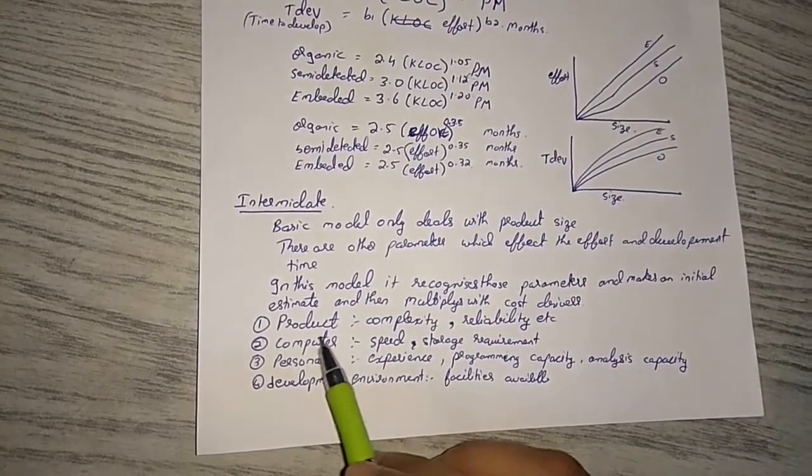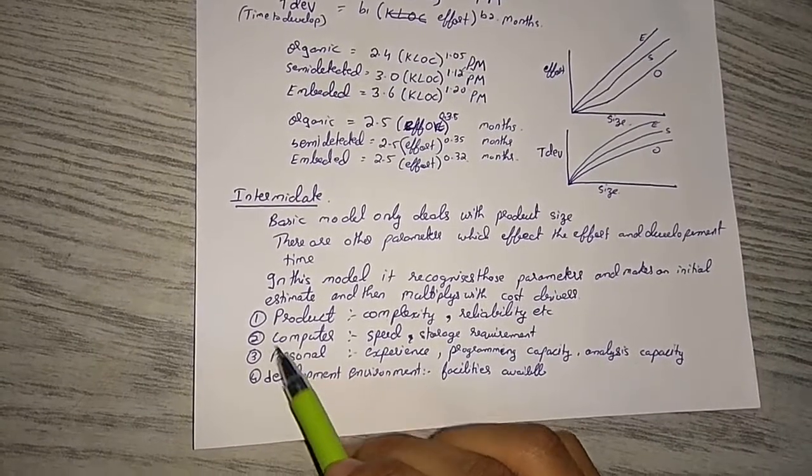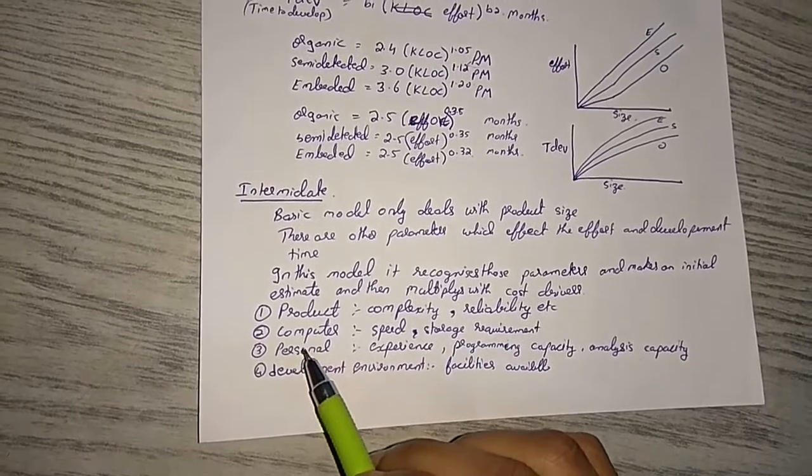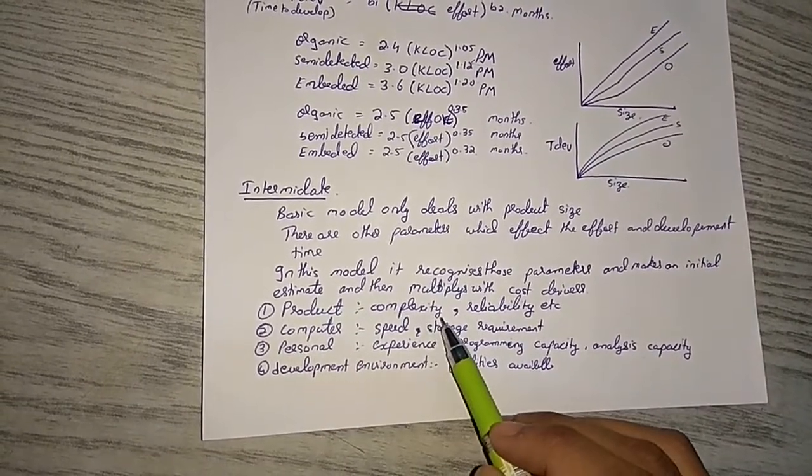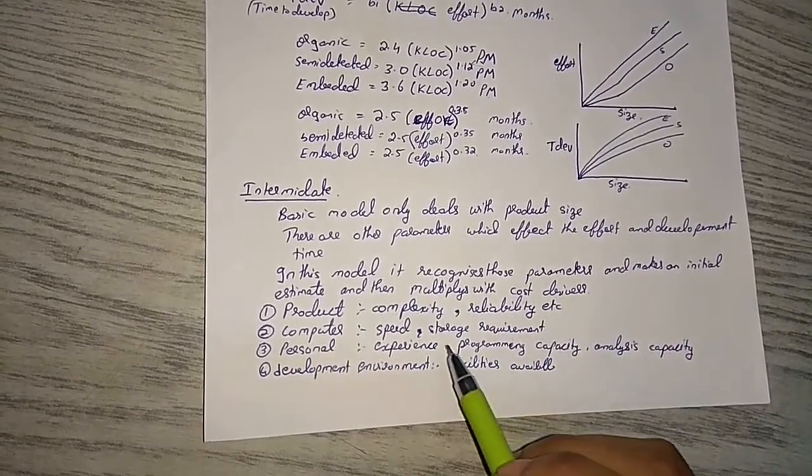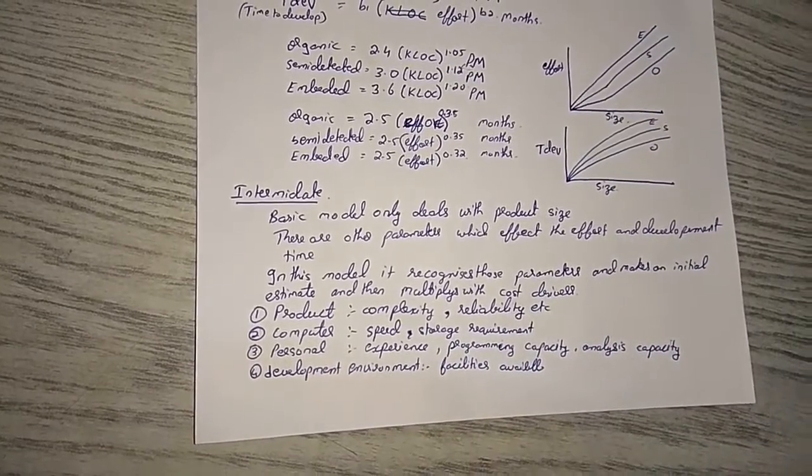I'm giving only the main four parameters, but there are 15 total. First one is product. The product complexity and reliability determine what product it is.